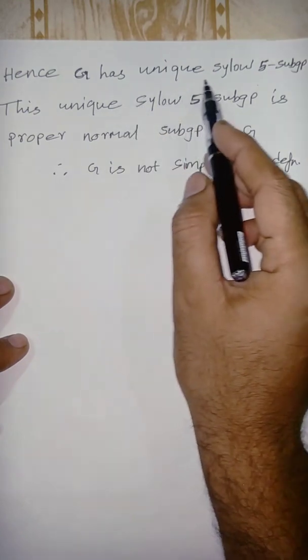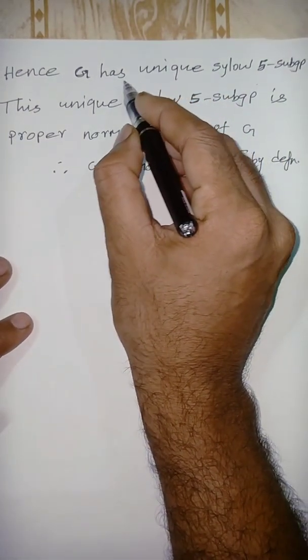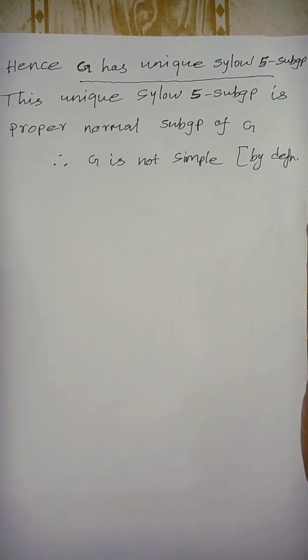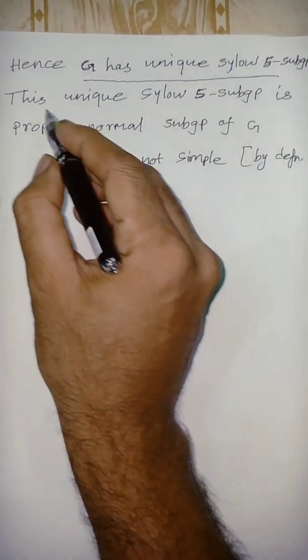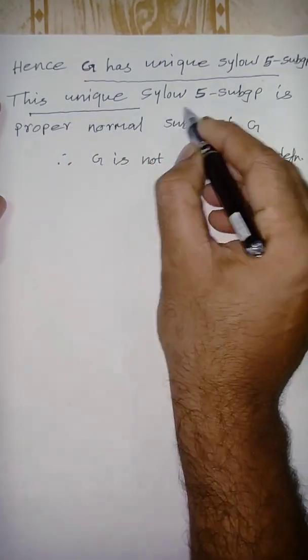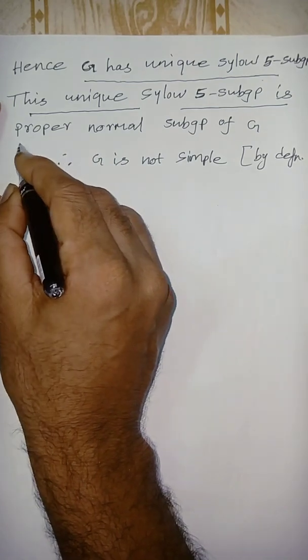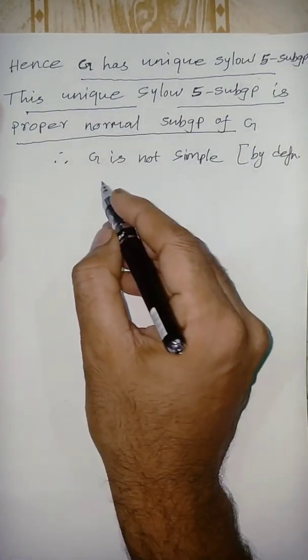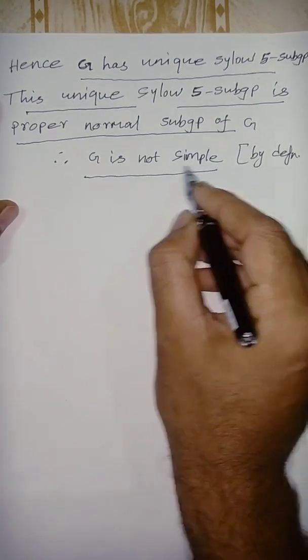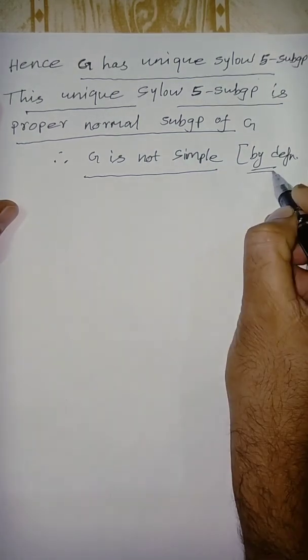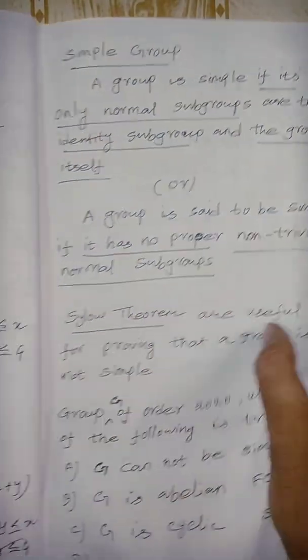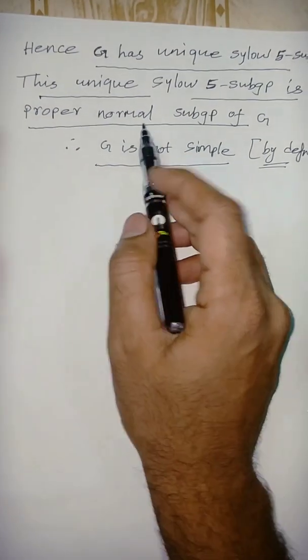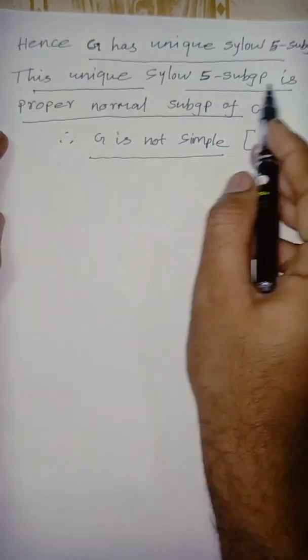From this we can understand G has unique Sylow 5-subgroup. This is a well-known theorem - this unique Sylow 5-subgroup is proper normal subgroup of G. So conclusion is very easy - G is not simple by definition, because it has no proper normal subgroup, but here unique Sylow 5-subgroup is proper normal subgroup of G.